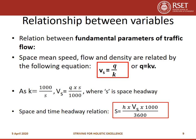Now we will see the relationship between variables — the fundamental parameters of traffic flow: speed, flow and density. The space mean speed, flow and density are related by the equation Vs equals q divided by k, that is space mean speed equals flow divided by density. Or we can write this as q equals kv. We can also substitute the equation k equals 1000 divided by S to get Vs equals q times S divided by 1000. The space and time headway relation is given as S equals h times Vs times 1000 divided by 3600.